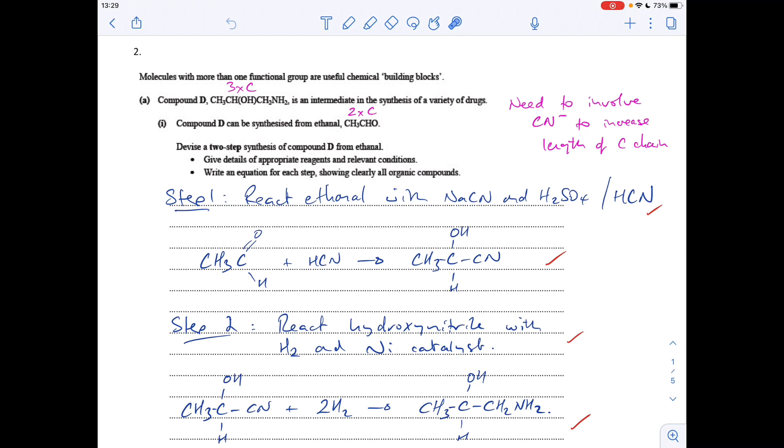Question two, we've got to produce compound D. Compound D is an intermediate in the synthesis of some drugs. It's synthesized from ethanol, the starting material's only got two carbons, whereas compound D's got three. So we need to grow the carbon chain by one, so we need to involve CN minus ions.